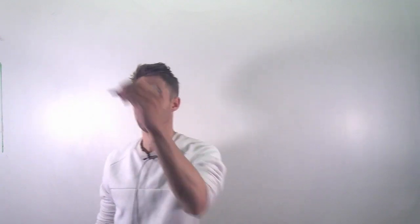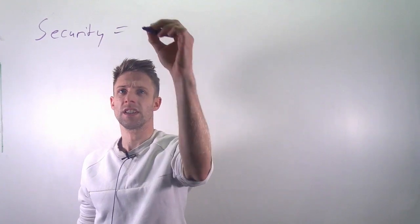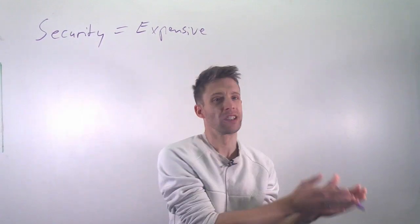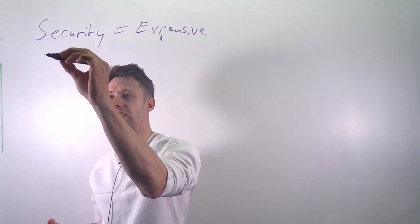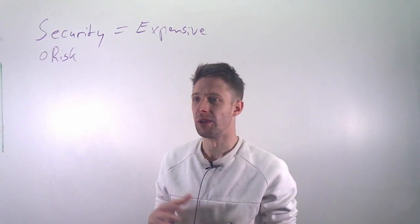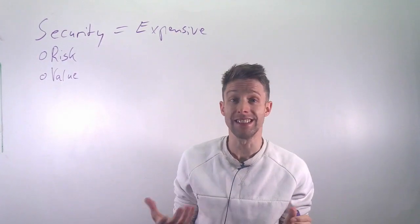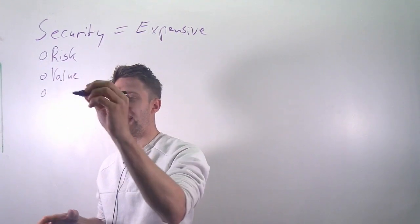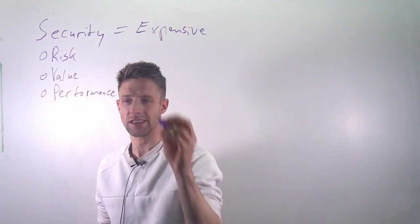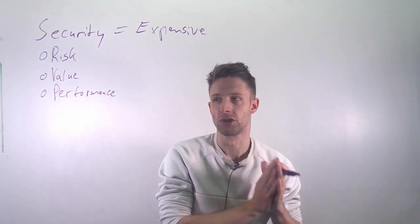A general principle in security is that security is a cost — it's expensive. It's not the case that the more security you have the better it is. Usually it's a trade-off between the risk: what is the risk that something goes wrong, what is the value of the different assets in your system if they get exposed, and another trade-off is, for example, performance — adding strong encryption might make things slower.